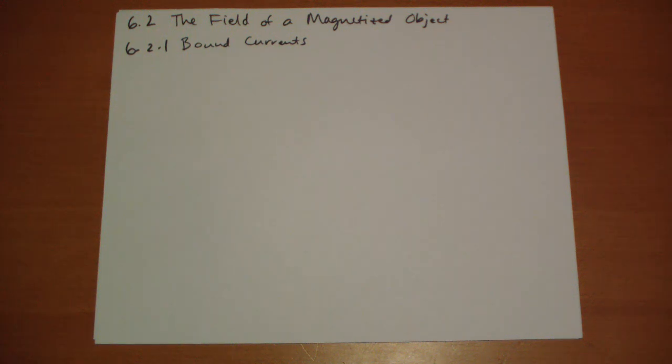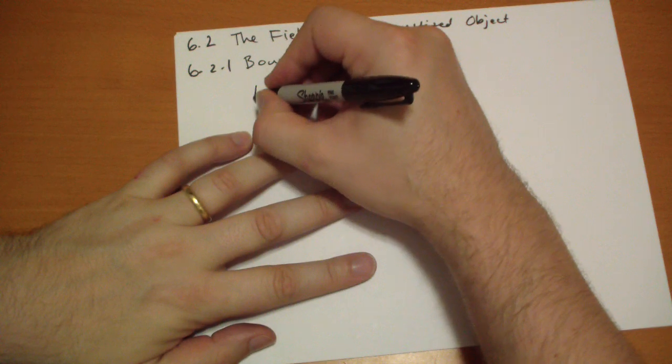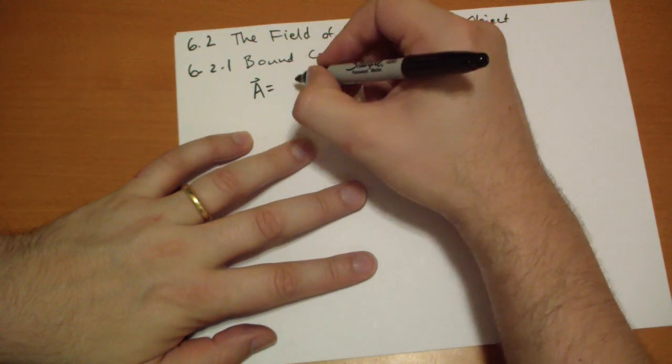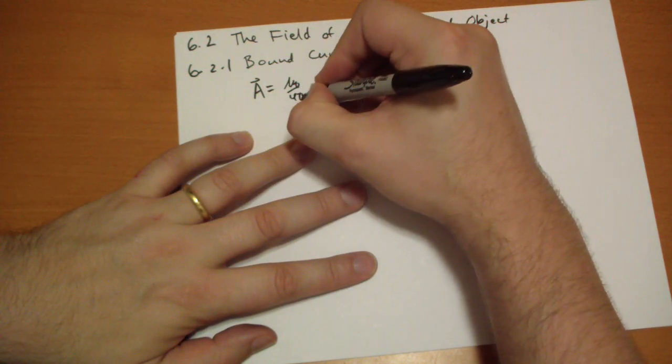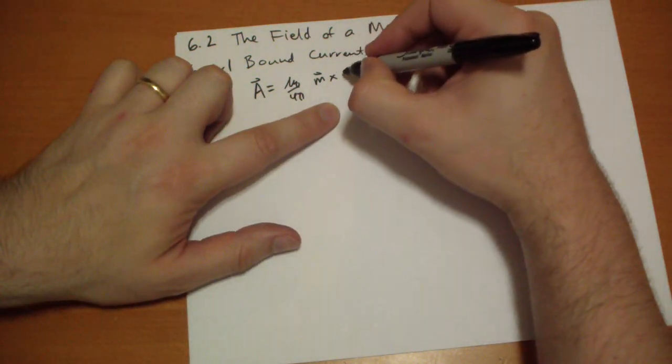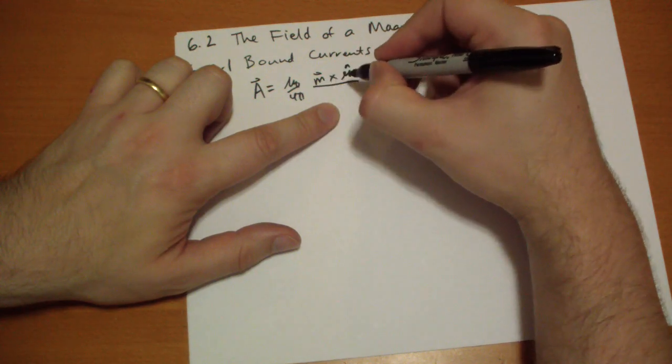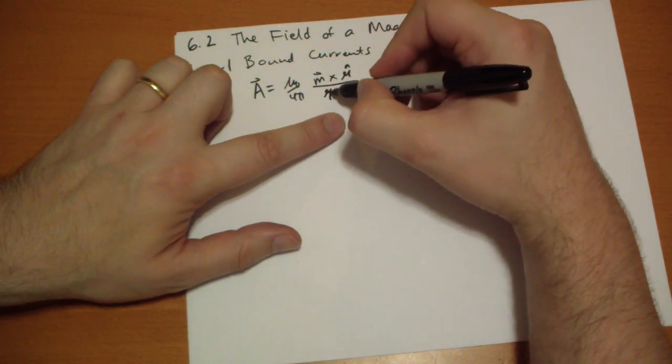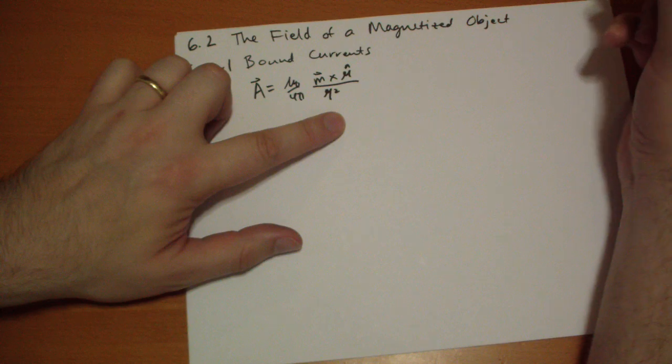So, if you have a magnetization M inside of an object, what is the vector potential that it produces? Well, for a single dipole, our A vector is equal to mu-naught over 4 pi, M vector, the small, for a single dipole, cross curly r-hat all over the vector r-squared.